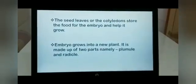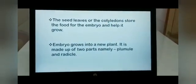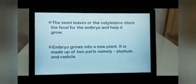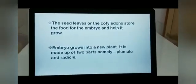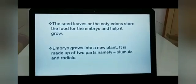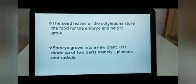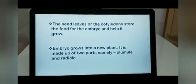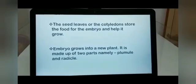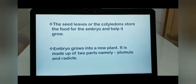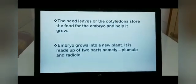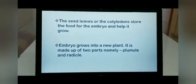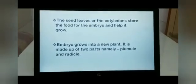Moving further, the seed leaves or the cotyledons store food for the embryo and help it grow. The embryo, as the word says, grows into a new plant. It is made up of two parts, namely the Plumule and the Radicle.